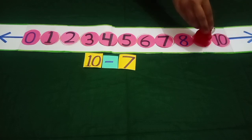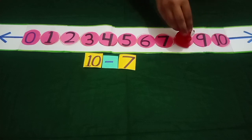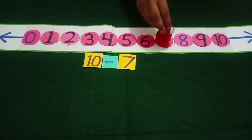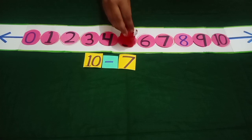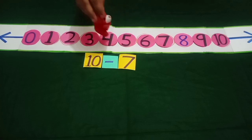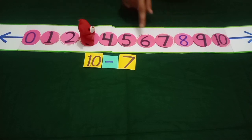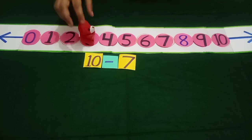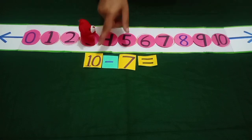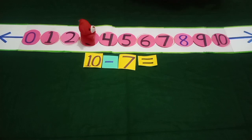One step, two steps, three steps, four steps, five steps, six steps and seven steps. Let's see on which number does it reach? It is on number three. Very good. It means ten minus seven is equal to three.